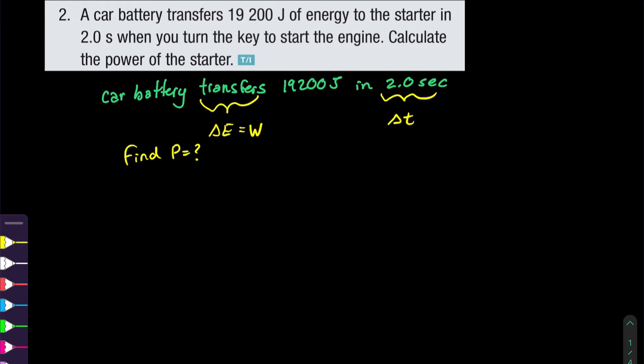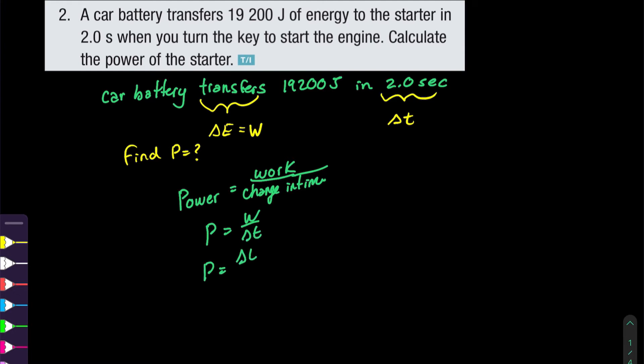Recall that we have a formula for power: power is the work over the change in time, written as W over delta T. Since work is the transfer of energy, we can write that as delta E over delta T. At this point all we have to do is put in the values we were given to calculate it.